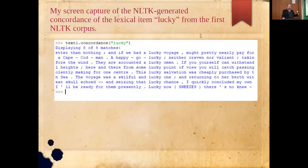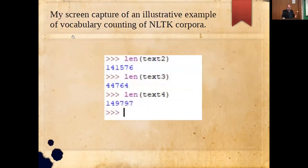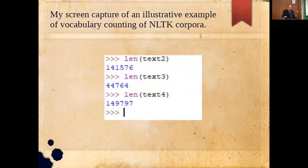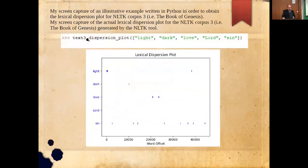For deeper analysis you are offered concordance analysis — you select an item you want to see in its left and right context and get an automatically generated list. Another useful feature is counting within NLTK corpora: you simply type 'len(text2)' — substituting the number of the previously selected text — press enter, and obtain the exact number of tokens.